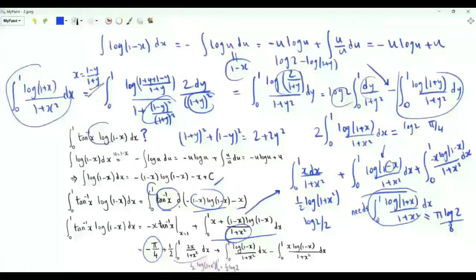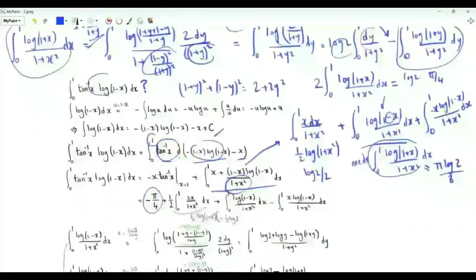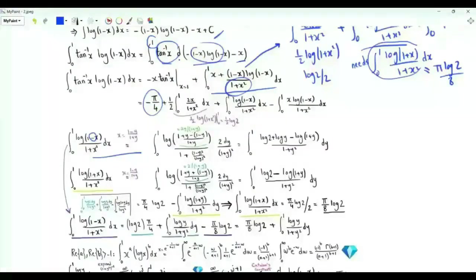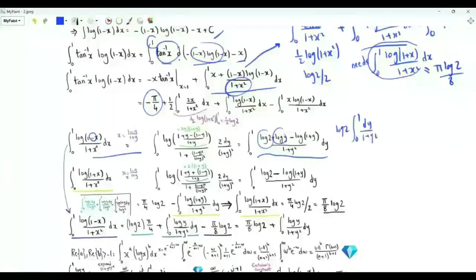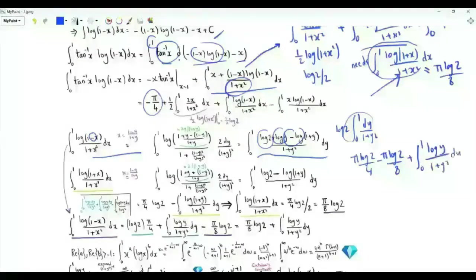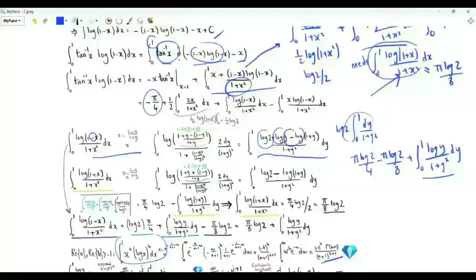Let's now go back to the integral involving log(1 minus x) over (1 plus x squared) with a minus sign. Using the same substitution x equal to (1 minus y) over (1 plus y), we get log(2y over (1 plus y)) in the numerator, which is log 2 plus log y minus log(1 plus y). We split into three integrals: log 2 times the integral from 0 to 1 of 1 over (1 plus y squared), plus the integral of log y over (1 plus y squared), minus the integral of log(1 plus y) over (1 plus y squared). To evaluate the log y integral, write 1 over (1 plus y squared) as the sum over j of (minus 1)^j times y^(2j).